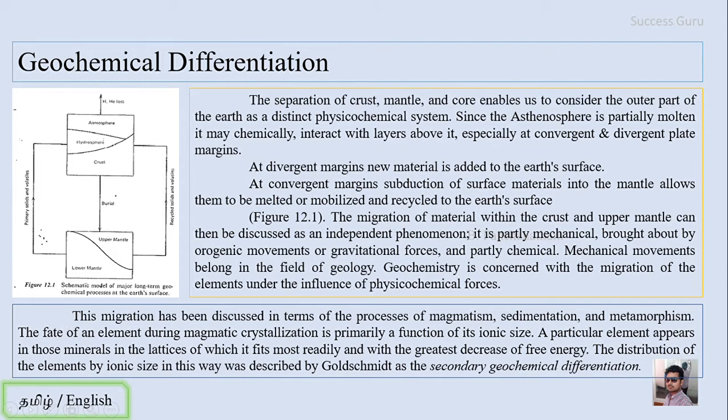The fate of an element during this magmatic crystallization is primarily a function of its ionic size. A particular element appears in those minerals in the lattice of which it fits most readily and with the greatest decrease of free energy.